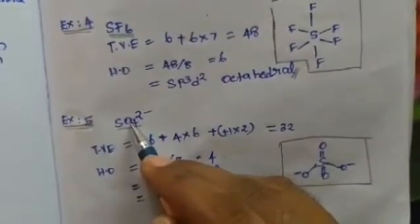Now you can work out these practice examples: water, phosphate ion, carbon dioxide, PF₆, and BF₃. If you have any doubts, please post in the comment section. Please subscribe to my channel. Thank you.